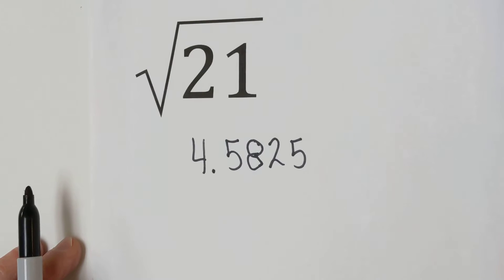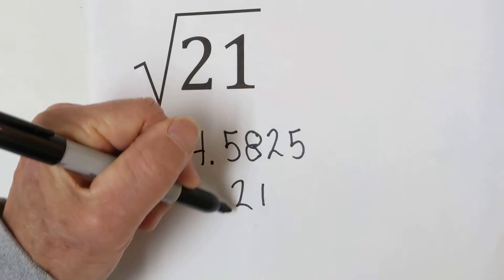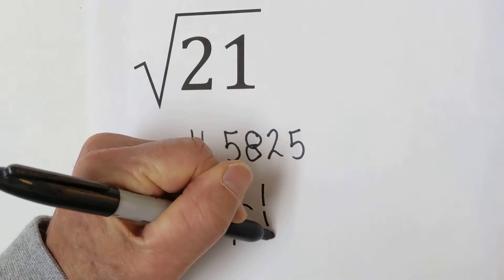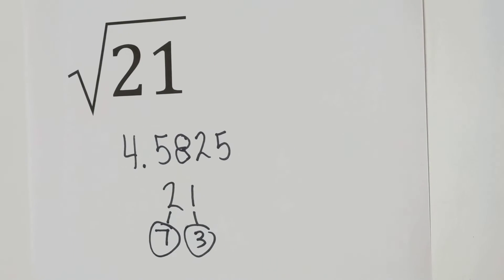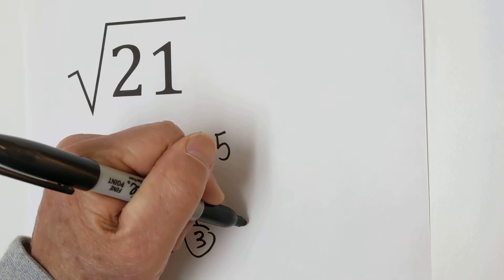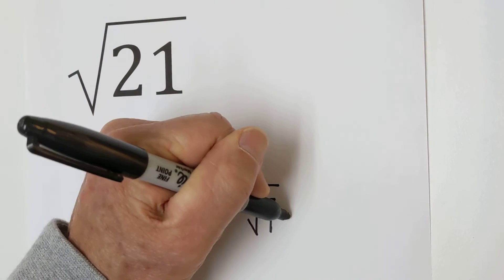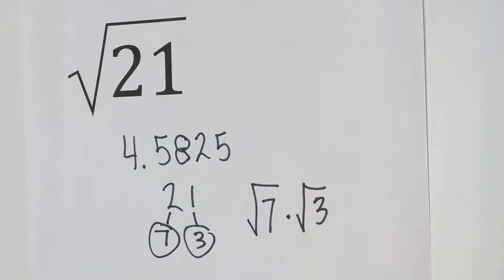Now, you can simplify by going through prime factorization. 7 times 3 is 21, and they are both prime, so you could write it like this. You could do the square root of 7 times the square root of 3.